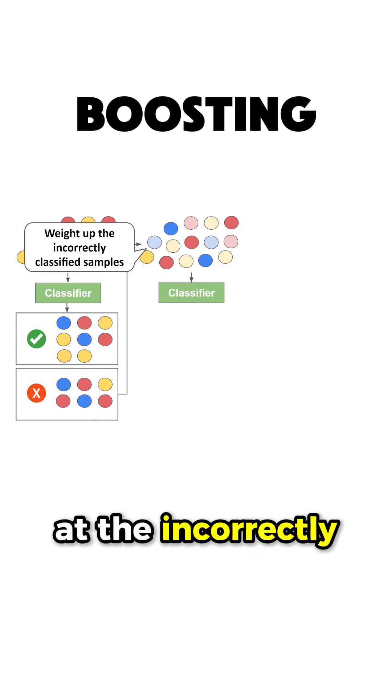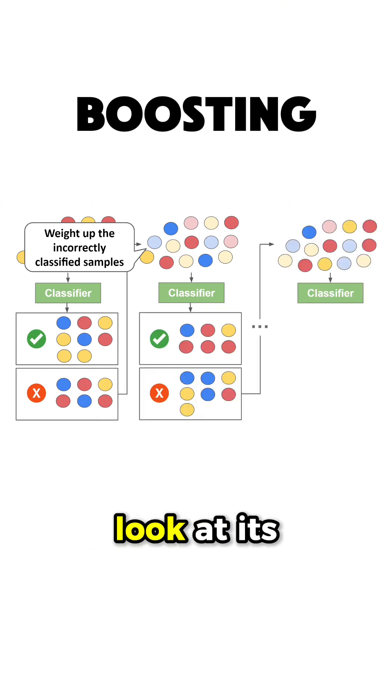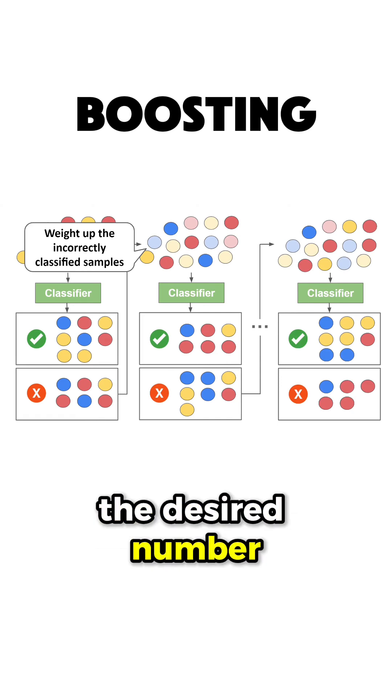Then you look again at the incorrectly classified samples, weigh them up, train a new model, look at its predictions, weigh up the misclassified samples, and so on until you get the desired number of models.